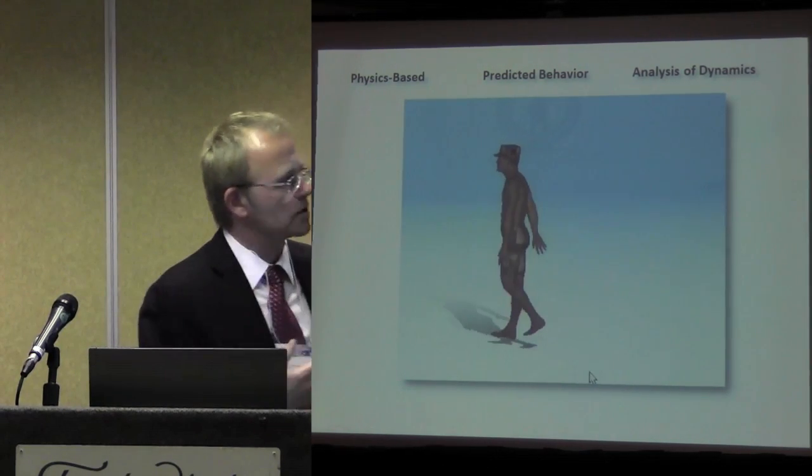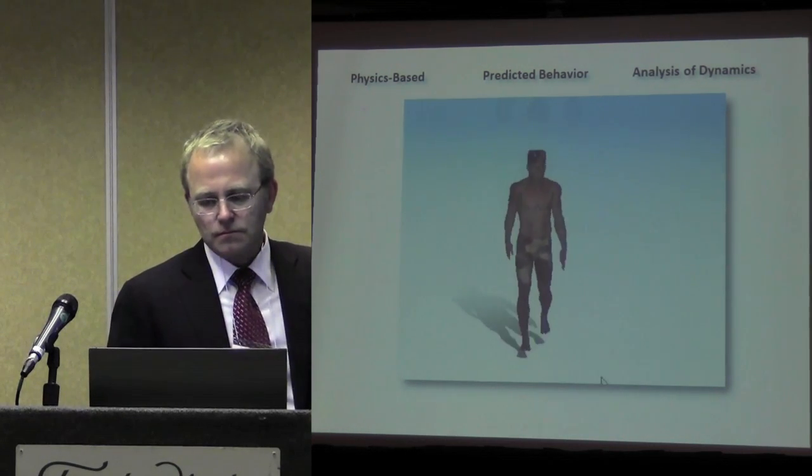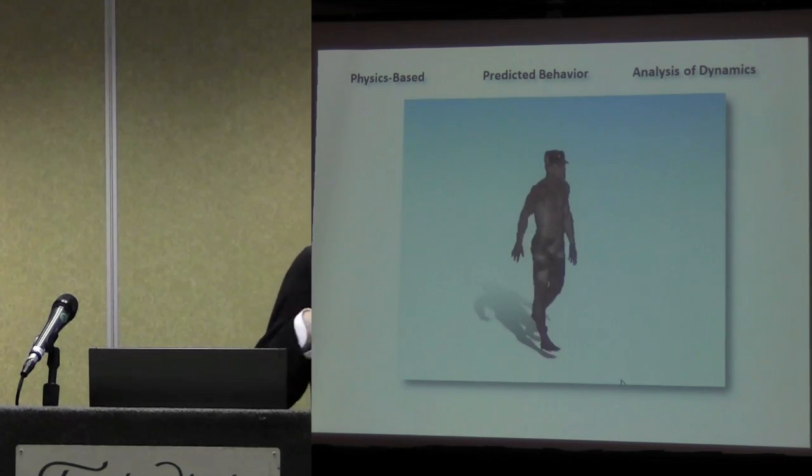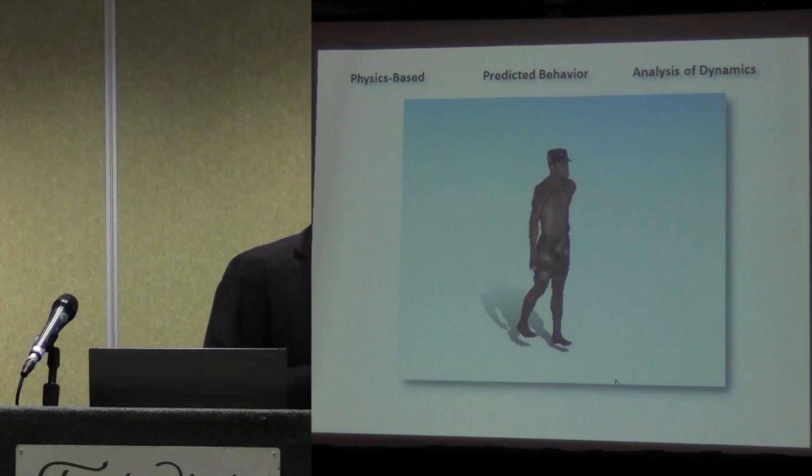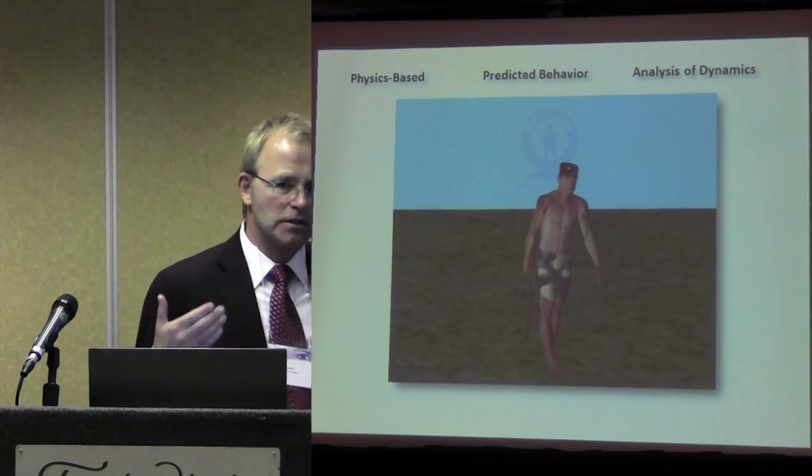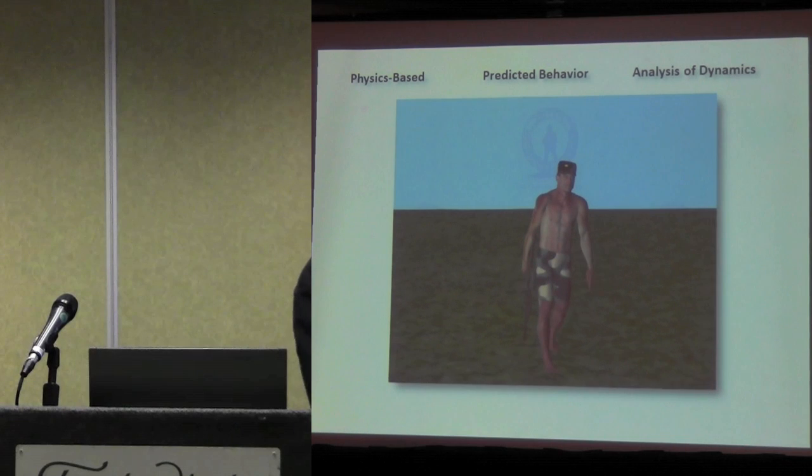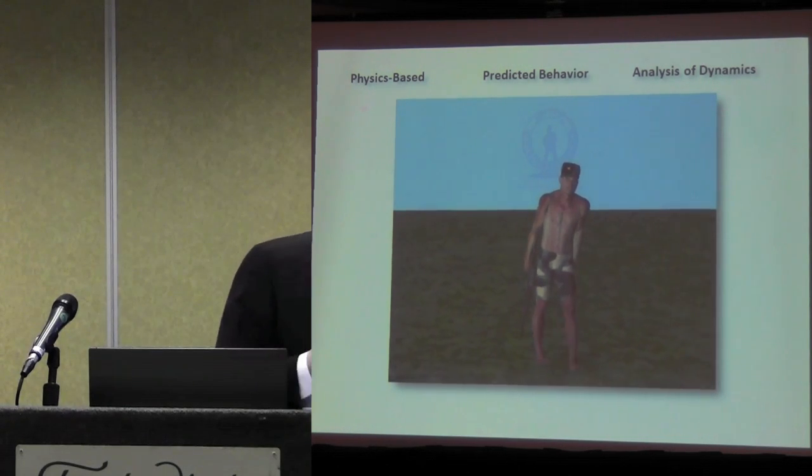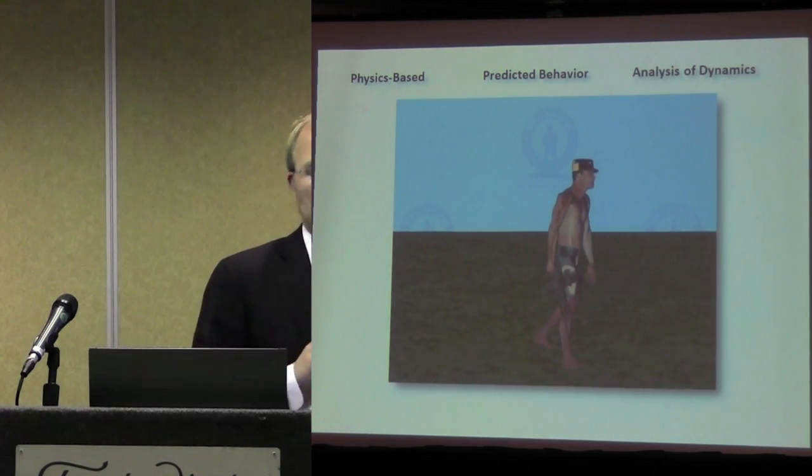We also have the forces associated with that motion. In this one, we've placed an asymmetric load on his body. Obviously, that weapon weighs a lot more than it really does, but just to make sure that it's obvious what's going on here, we now have a predicted walk that's showing you what happens if you have a lot of weight on one side of your body.